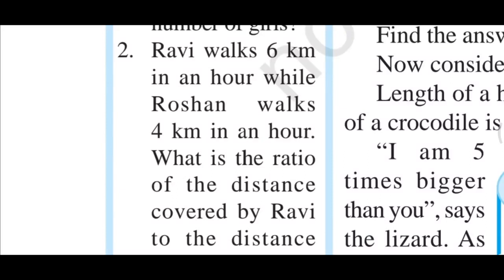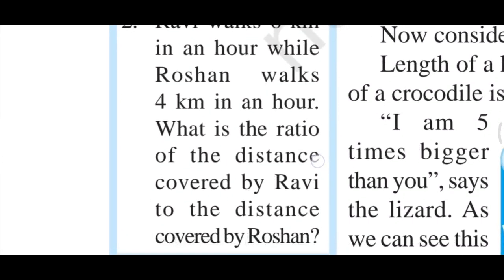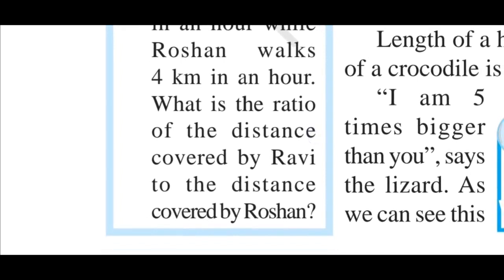This is question number 2. Ravi walks 6 km in an hour, while Roshan walks 4 km in an hour. What is the ratio of the distance covered by Ravi to the distance covered by Roshan?